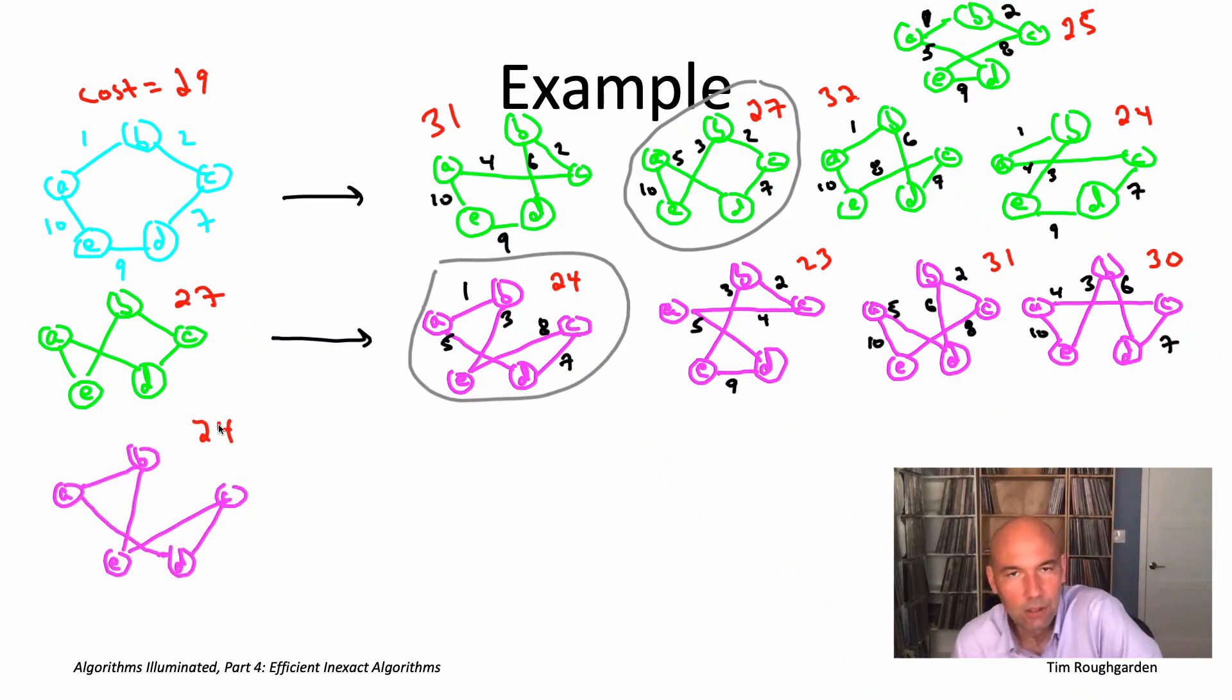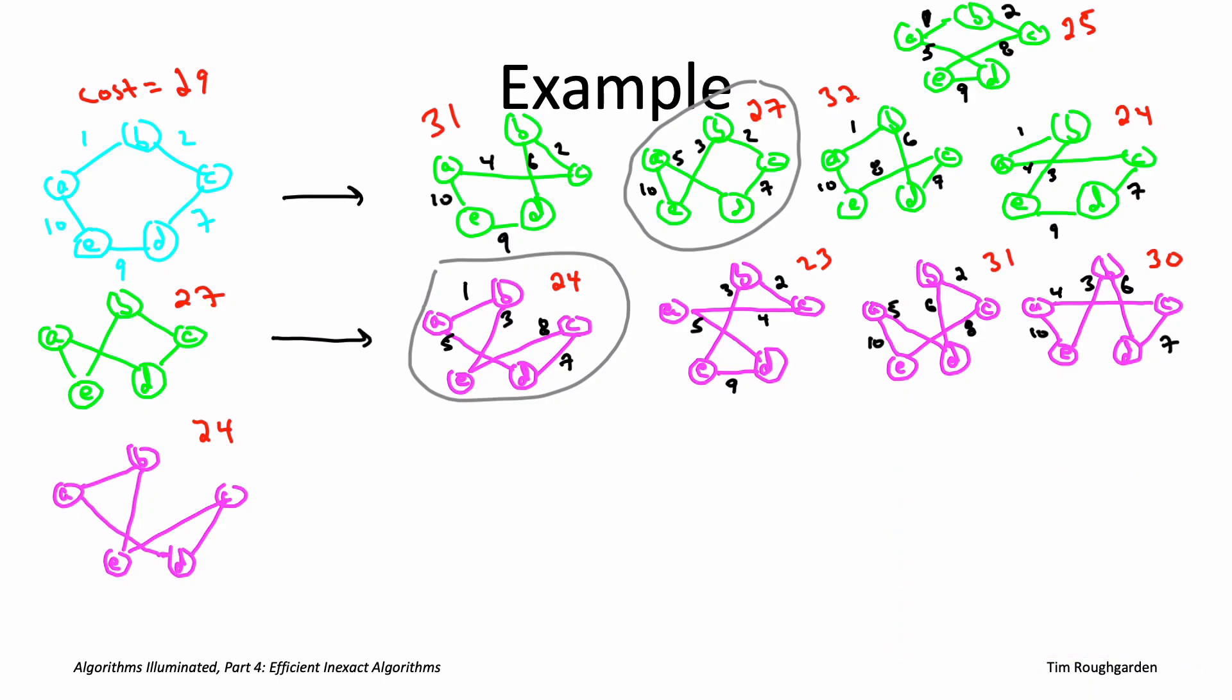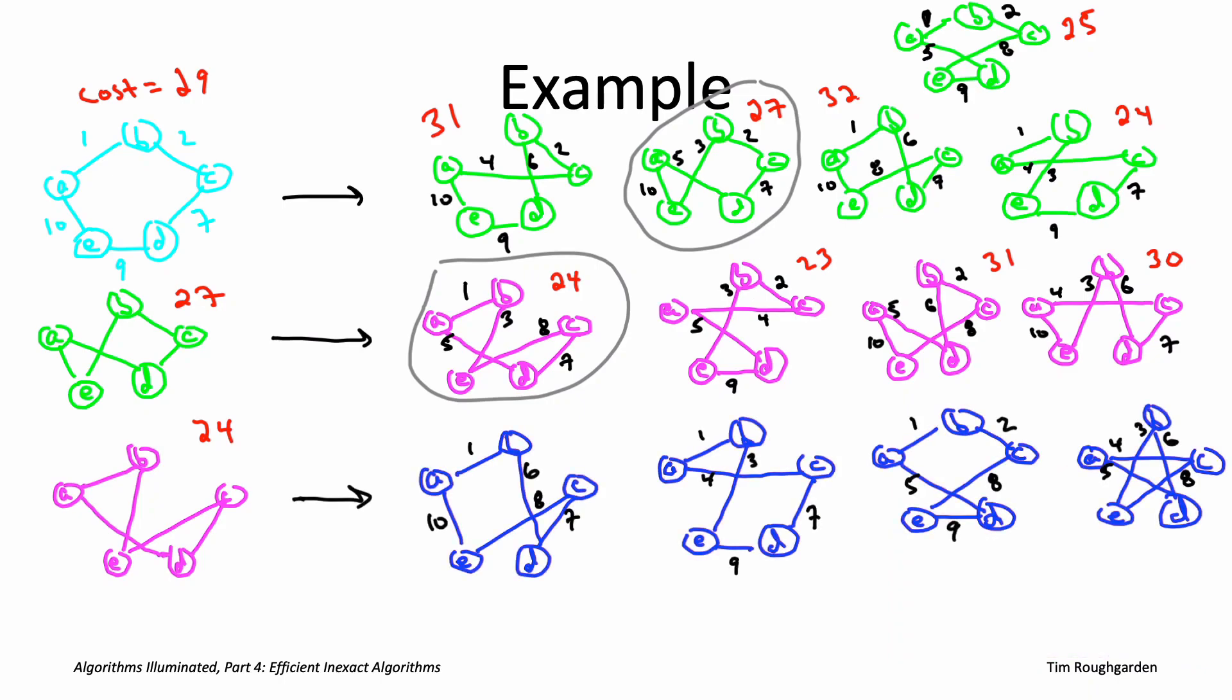And now we go to the third iteration of the while loop. So we again ask, can we make this tour even better through a two-change? There's again five two-changes we could look at. And again, one of those five is going to take us straight back to the tour we just came from. So let me just show you the results of the four other two changes. So let's again check the cost of each of these four tours, see if any of them are better, if any of them are less costly than 24, our current tour.